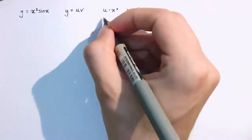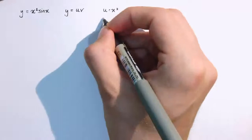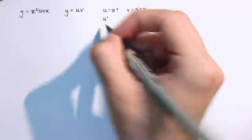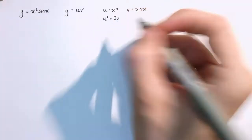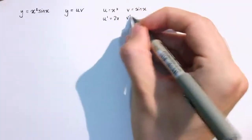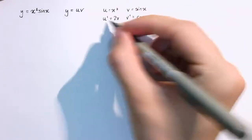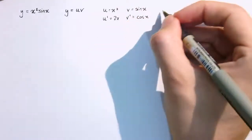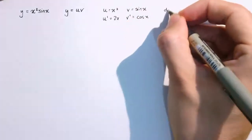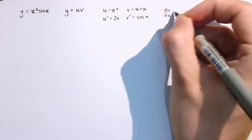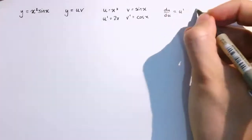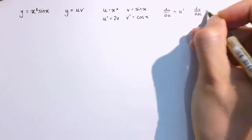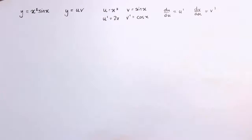I'm going to use the notation u dashed for the derivative, so u dashed would be 2x and v dashed would be cos x. You might sometimes write that as du by dx for u dashed, and dv by dx for v dashed — that's just a notation difference.